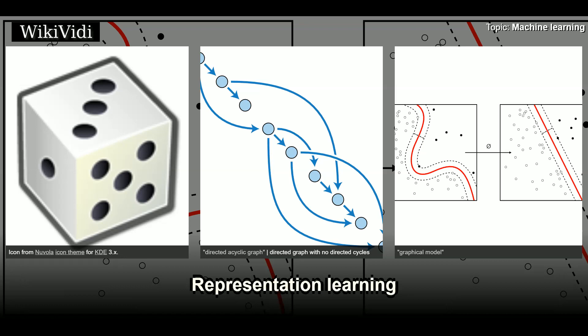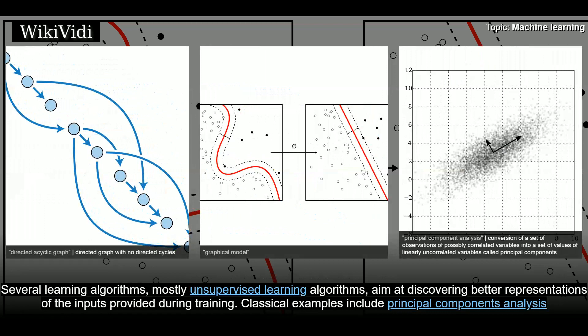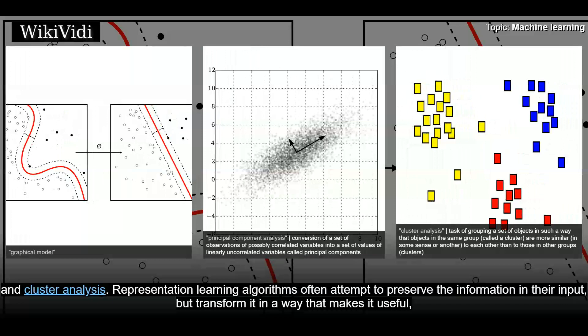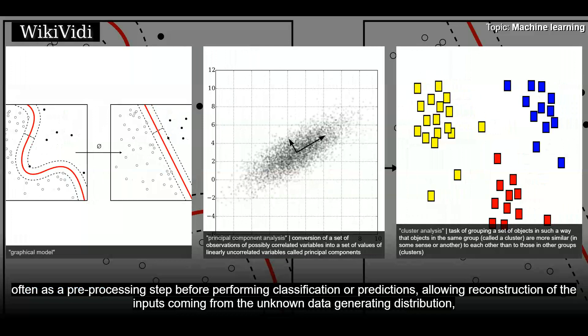Representation learning. Several learning algorithms, mostly unsupervised learning algorithms, aim at discovering better representations of the inputs provided during training. Classical examples include principal components analysis and cluster analysis. Representation learning algorithms often attempt to preserve the information in their input, but transform it in a way that makes it useful, often as a pre-processing step before performing classification or predictions, allowing reconstruction of the inputs coming from the unknown data generating distribution.